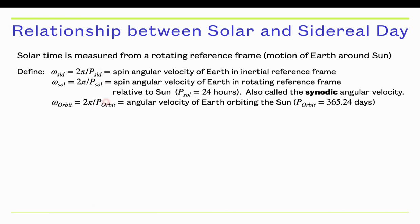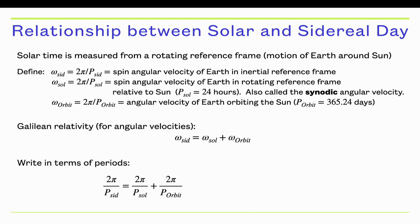These three angular velocities are related. This is basically just a statement of Galilean relativity for angular velocities. The sidereal angular velocity is equal to the solar angular velocity plus the orbital angular velocity of the Earth going around the Sun. If you plug in for what these values are, you get this equation. If you divide through by the 2π's, you get a relationship between the sidereal period, the solar period, and the orbital period of the Earth.